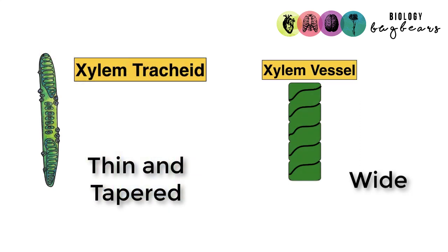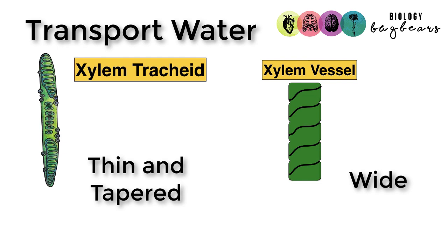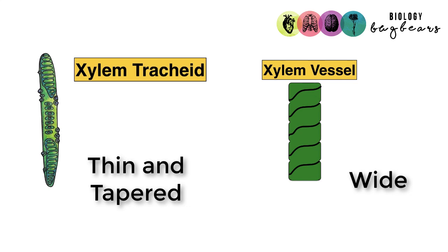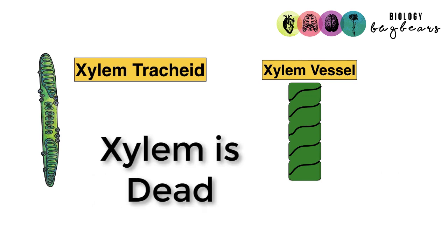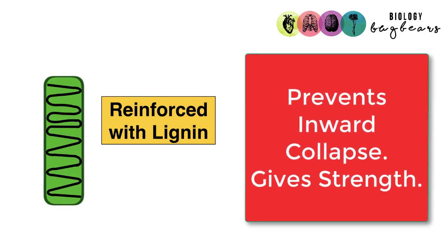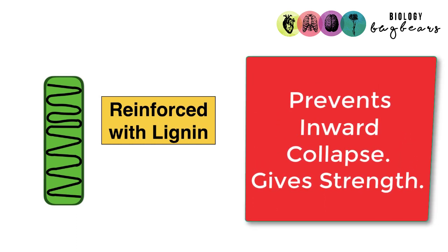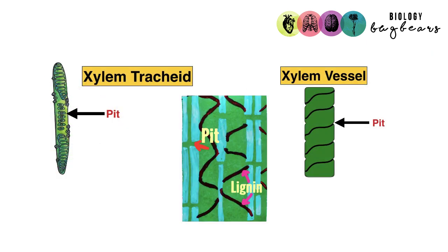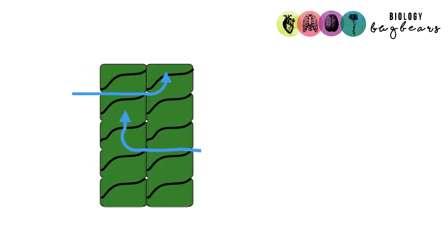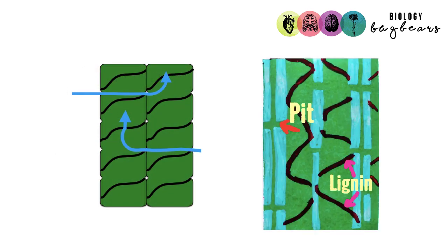Next is vascular tissue — there is a separate video on this so we won't go into too much detail. Xylem is the first vascular tissue; it transports water. There are two forms: xylem tracheids, which are thin and tapered, and xylem vessels, which are wider and therefore more efficient at transporting water. Xylem is dead tissue, reinforced with lignin laid down in a spiral formation to prevent the inward collapse of vessels when the column of water is being pulled up. Xylem vessels and tracheids also have pits which allow water to pass sideways from vessel to vessel and then upwards.